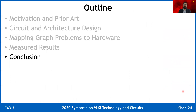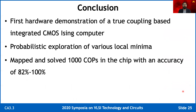Now let's look at the conclusion. To the best of our knowledge, this was the first hardware demonstration of a true coupling-based integrated CMOS Ising computer. We have experimentally verified that our chip probabilistically explores various local minima. We mapped and solved 1,000 combinatorial optimization problems on the chip with an accuracy of 82 to 100%. This concludes my talk — thank you for your attention.